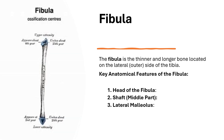The fibula is the thinner and longer bone located on the lateral — outer — side of the tibia. Unlike the tibia, the fibula does not bear significant weight, but it contributes to the stability and support of the lower leg, particularly at the ankle joint.